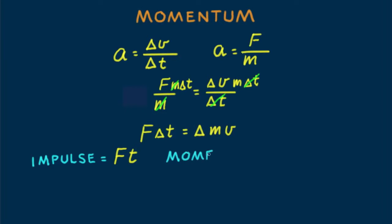The quantity mv is called momentum, which is inertia in motion. A massive object at rest has inertia but no inertia of motion — no momentum. But apply a force to it and it acquires momentum. Better said: apply an impulse to an object and it will undergo a change in momentum.